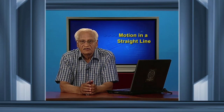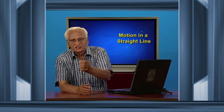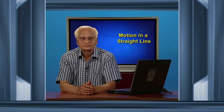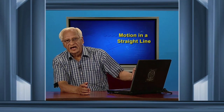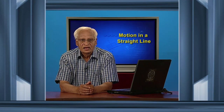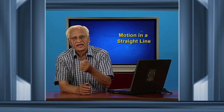The distance covered depends upon the path taken. Going from A to B along a meandering path gives the distance travelled. The direct arrow from A to B shows the displacement. Displacement from A to B is positive; from B to A it can be negative. So displacement can be positive or negative, whereas distance covered is always positive. If you go from A to B and back to A, the distance covered is 2L but the displacement is zero.